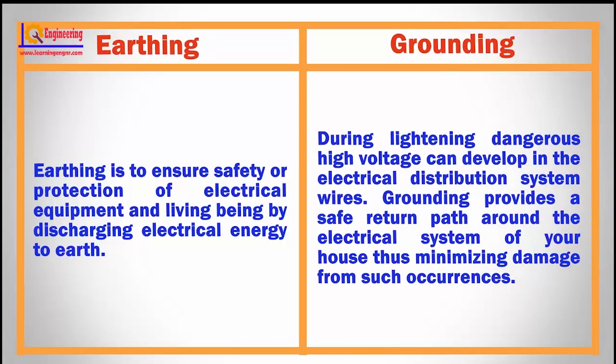During lightning, dangerous high voltage can develop in the electrical distribution system, whereas grounding provides a safe return path around the electrical system of your house, thus minimizing damage from such occurrences.